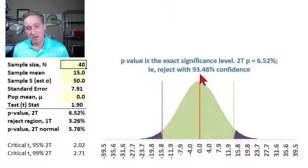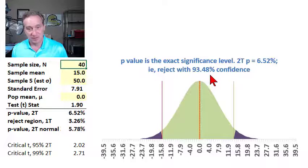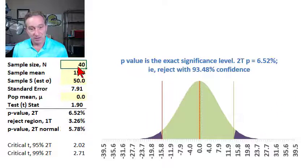And we would not be able to reject this null with either 99, much less 99% confidence. On the other hand,